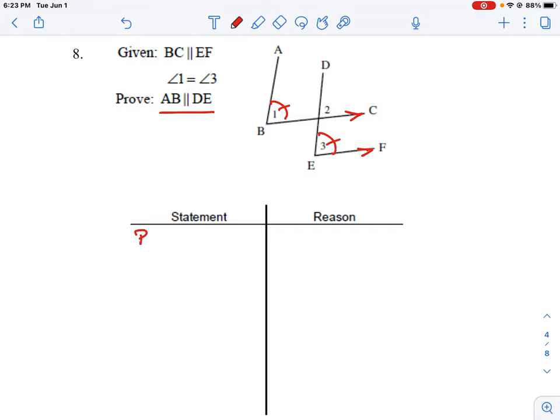Our first statement here will be BC is parallel to EF, and the reason for that is that it's a given statement. So we know that to be true because that's given to us in the question. We also know that angle 1 is equal to angle 3, so I can write those down. That's going to take care of the two steps that we know which we don't have to use any property of angles to determine if they're true.